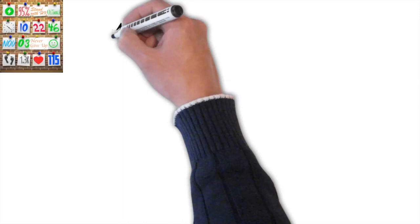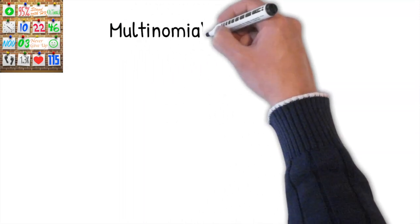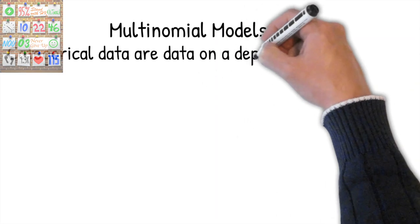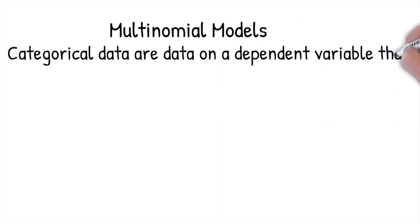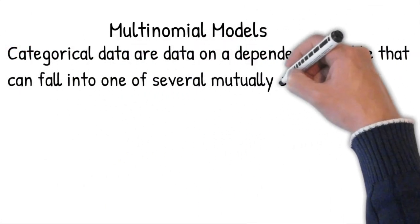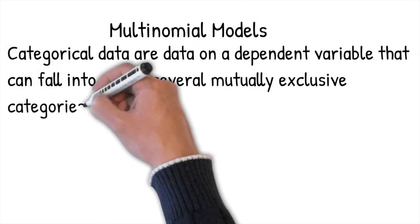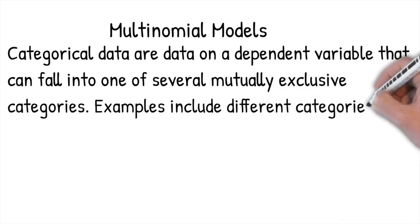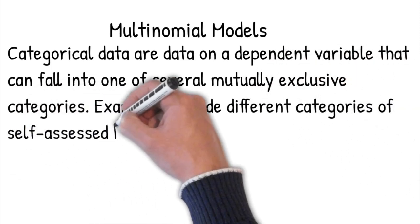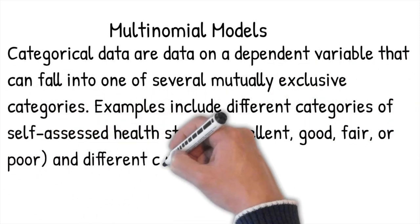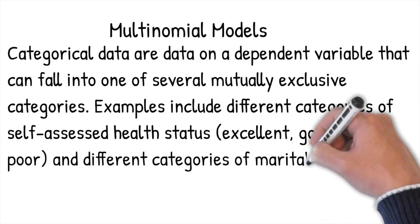Hi, I'm Bob. Let's learn chapter 15, Multinomial Models, and do the exercises at the end of this chapter. When the dependent variable is a categorical variable, we use multinomial models.